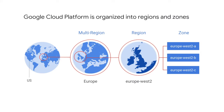Think of a zone as a single failure domain within a region. As part of building a fault-tolerant application, you can spread resources across multiple zones in a region. That helps protect against unexpected failures.